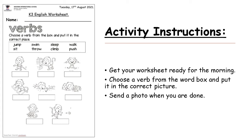So what do we have to do? We have to choose a verb from the word box and put it in the correct picture. For example, our first word here says jump. Jump is something we do, so it's a verb. We have to go look at which one of these pictures shows the monkey jumping. Then underneath the picture, you are going to write the correct verb. Easy peasy, right?